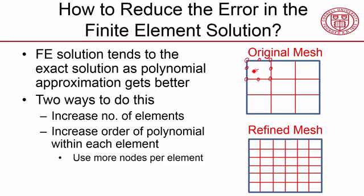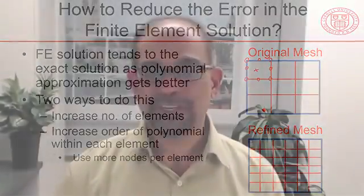That will give us a better solution. In this case it'll be nine second-order polynomials rather than nine first-order polynomials. So those are the two ways to reduce the error. And because the solver already uses the higher-order elements, we'll mainly need to worry about refining — using more elements.